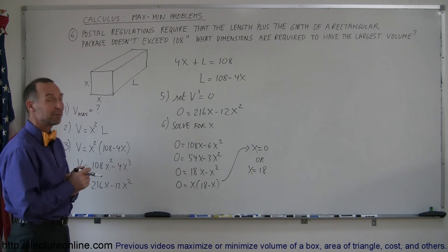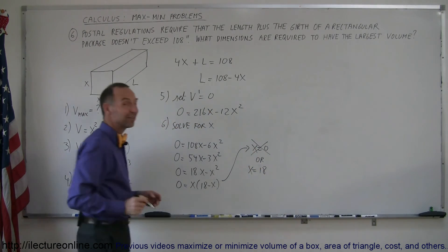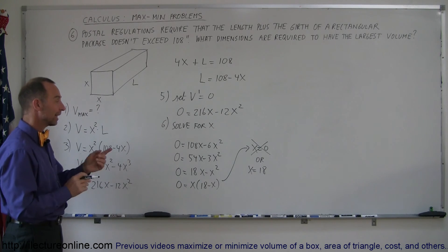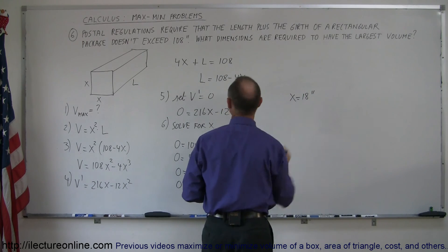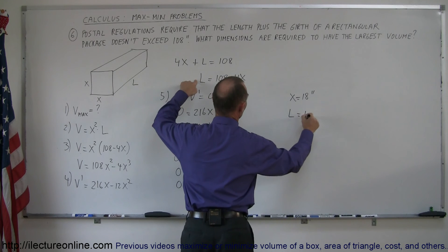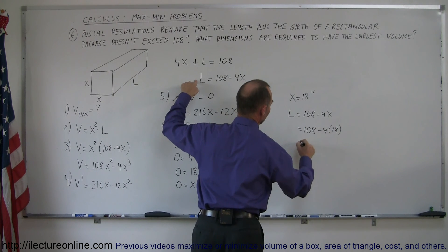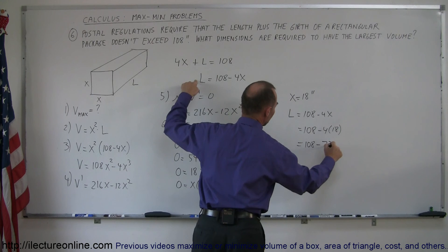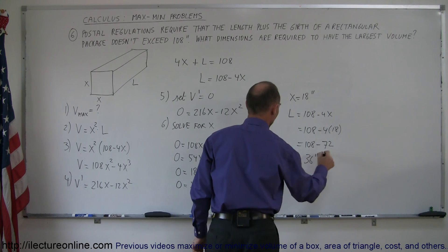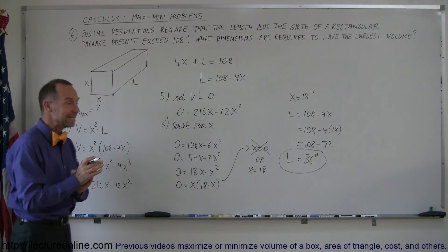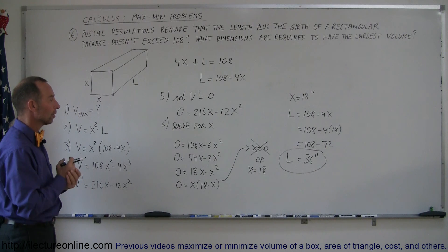Now obviously a package cannot be very big if the girth is zero by zero, so that's not one of our possible answers. Matter of fact that will give us the minimum volume, the volume of zero, but if you let x equals 18 then we have the maximum volume package. So that means x must be equal to 18 inches, and then from our relationship that L is equal to 108 minus 4x, which means 108 minus 4 times 18, and 4 times 18 is 72, that's 108 minus 72, which means 36 inches is what the length can be. So if you make the sides 18 by 18 and the length 36 inches, you have the largest volume package you can ship to the U.S. Postal Service. And that's how you do that problem.